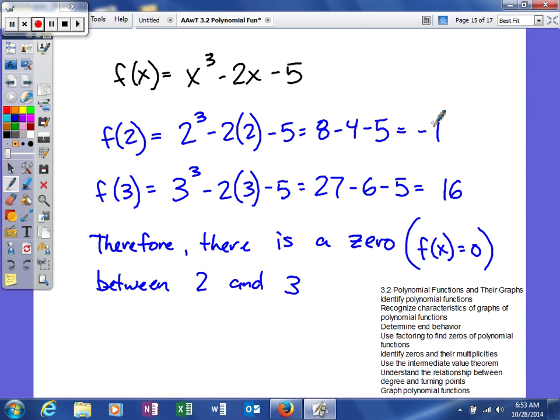What the intermediate value theorem says is it is not possible to go from f(2) = -1 to f(3) = 16 without somewhere in between crossing the x-axis. Therefore, there is a zero, f(x) = 0, between 2 and 3.